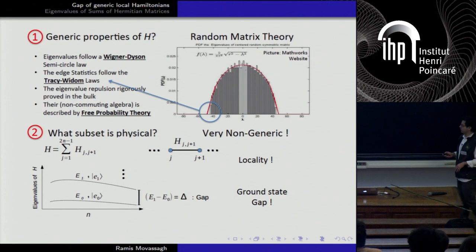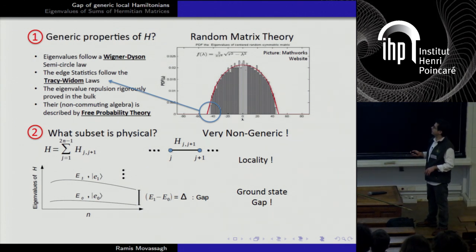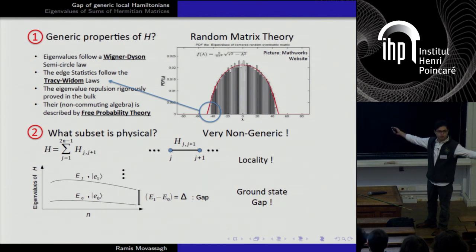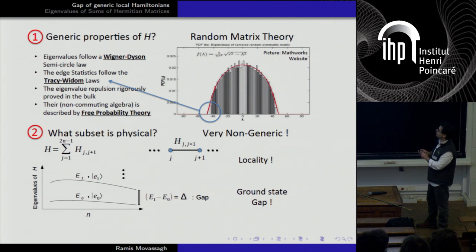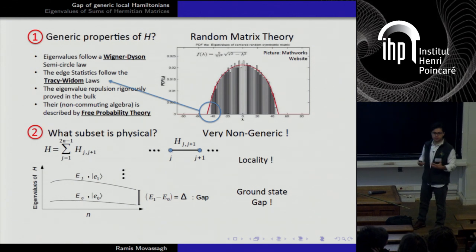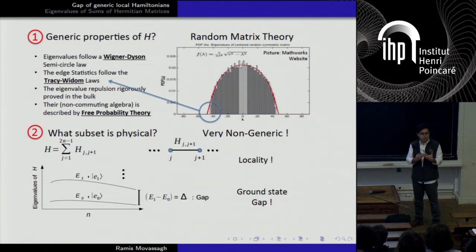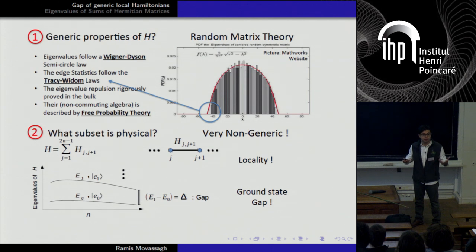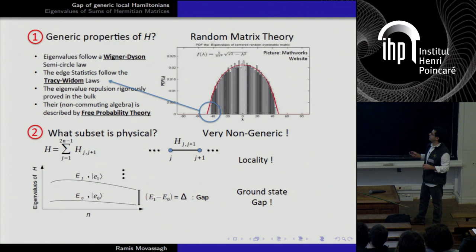Some things we have learned: our Hamiltonians, our operators, are not just some gigantic Gaussian matrix. What they are is sums of little four-by-four Hermitian matrices that don't commute. Together it's an exponentially large operator, but the number of random parameters going in grows linearly — or on a square lattice, quadratically — with the number of local terms. So even if the local terms are generic, H is highly non-generic. It just doesn't have enough random parameters.